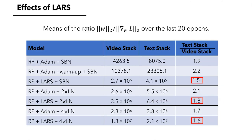This table lists the ratio between the norm of the width and the gradient. The higher the ratio is, the better the model is optimized. The ratio of LARS is always larger than Adam. LARS always reduces the relative gap between the ratios of the text stack and video stack. These two facts suggest that the optimization of the two modalities is better aligned with LARS than without.